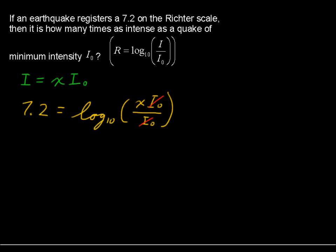And so now we're left with 7.2 equals log base 10 of x. We're going to use that property of logarithms that lets us say this means that 10 raised to the power of 7.2 equals x. So I'll just write that real quickly. 10 to the 7.2 equals x.